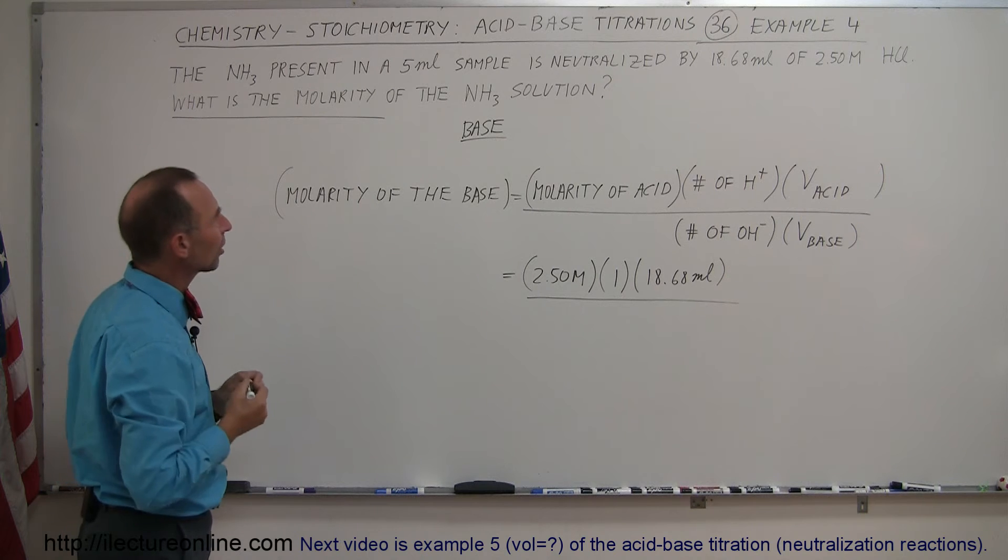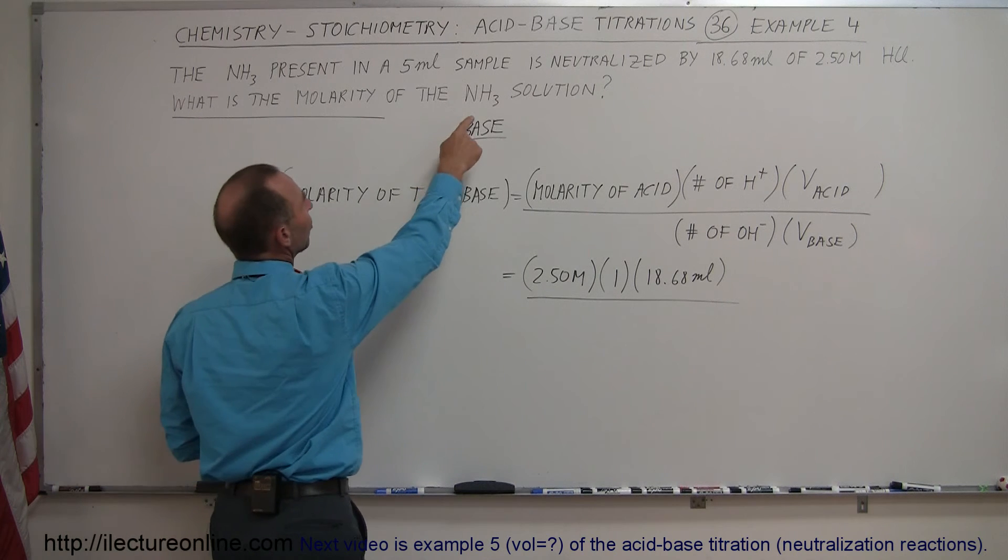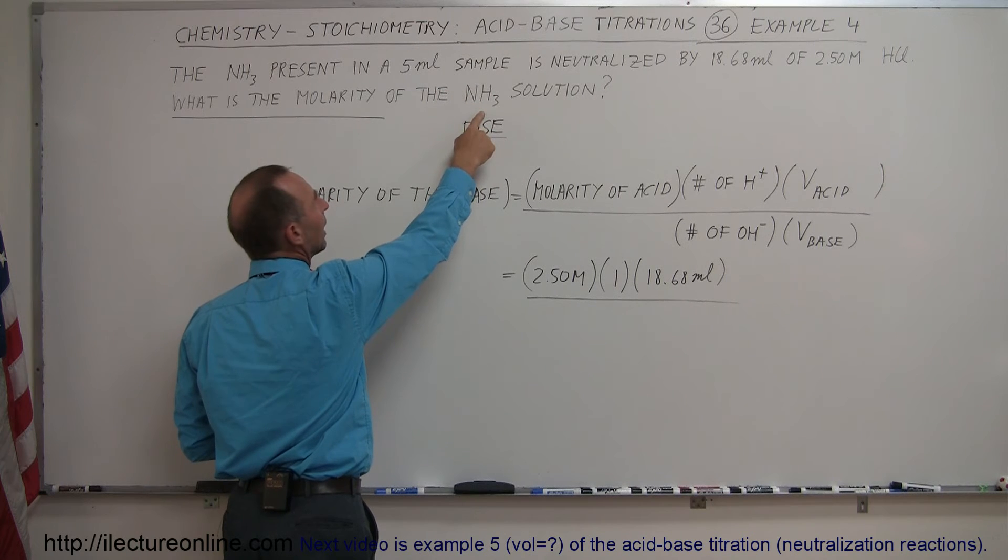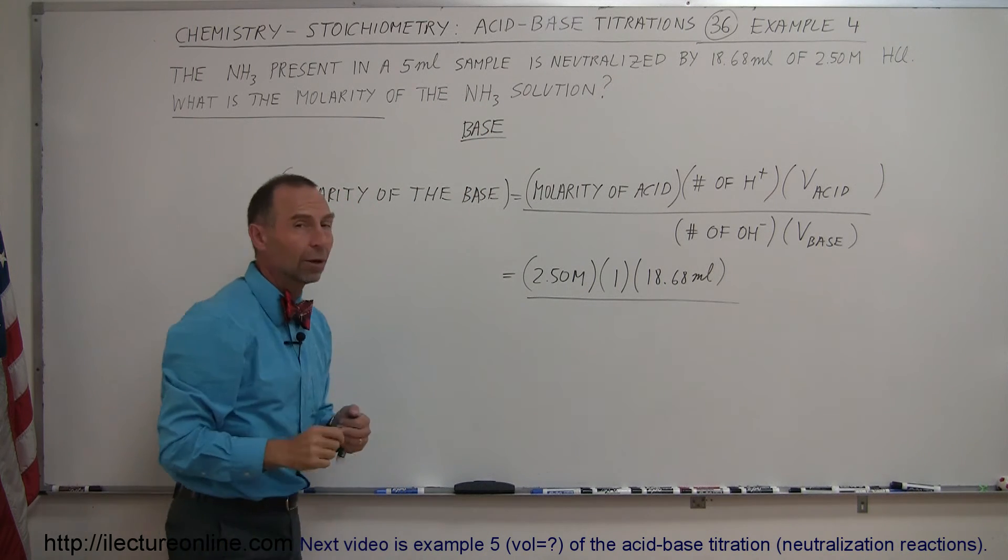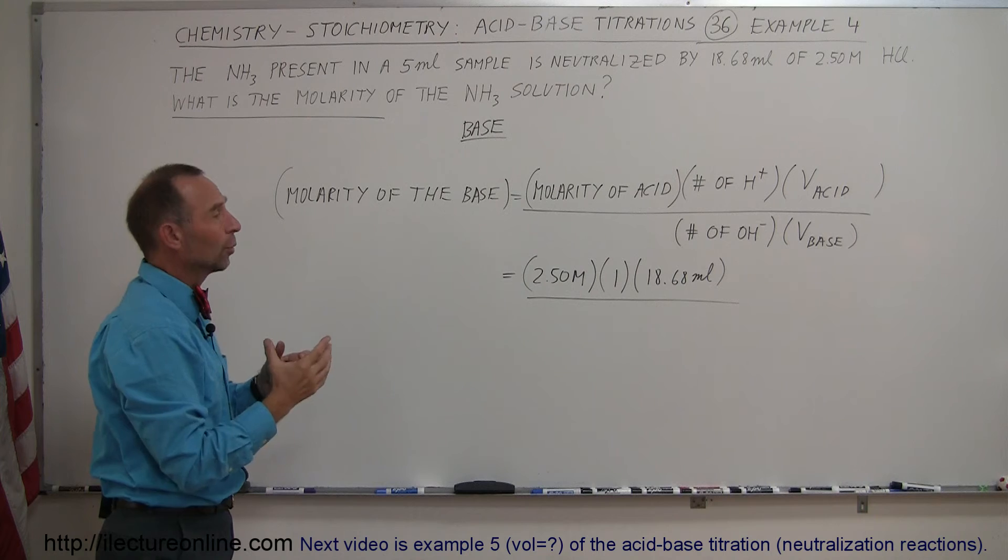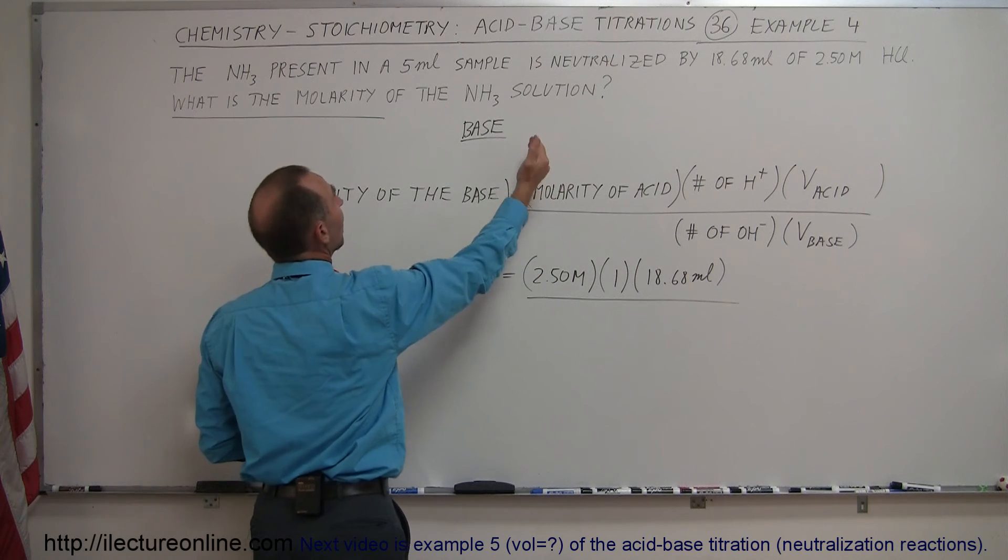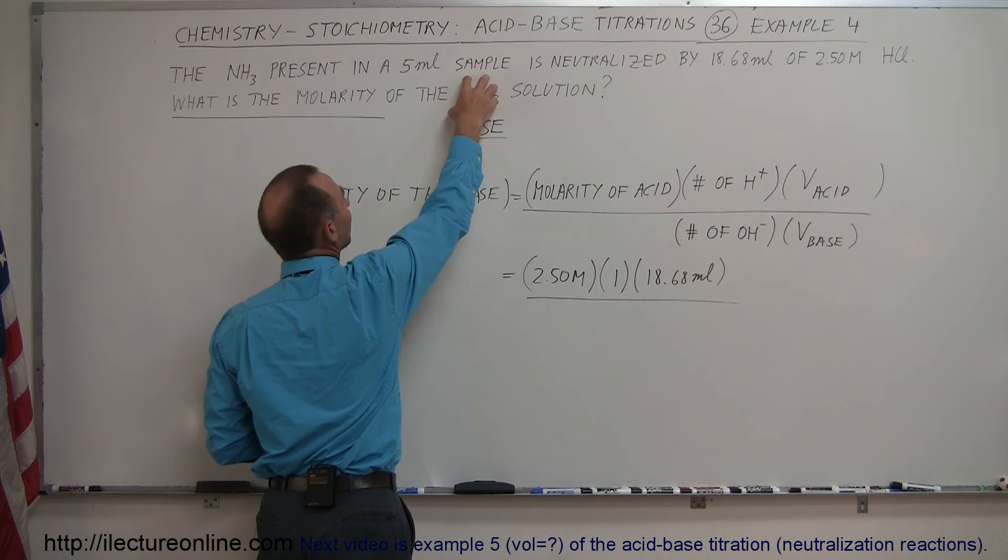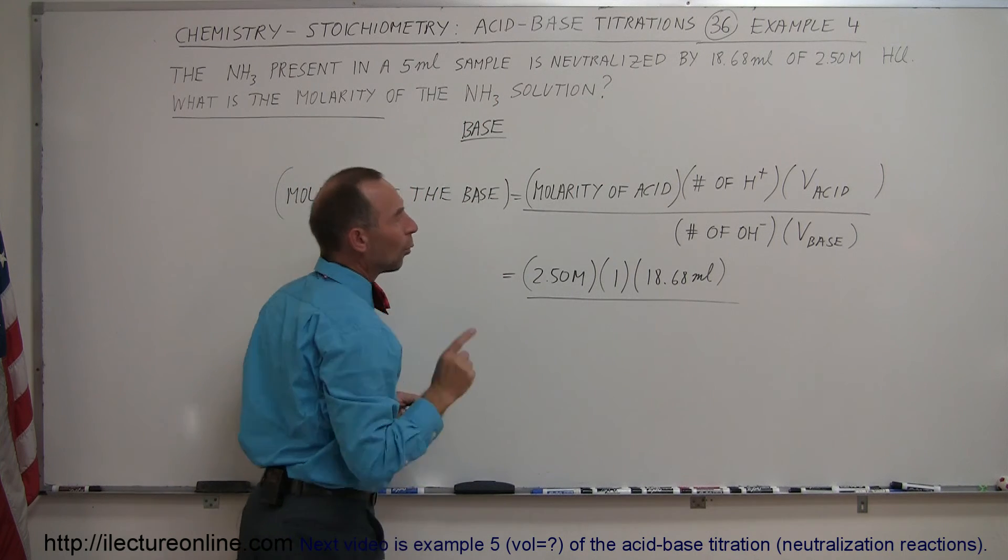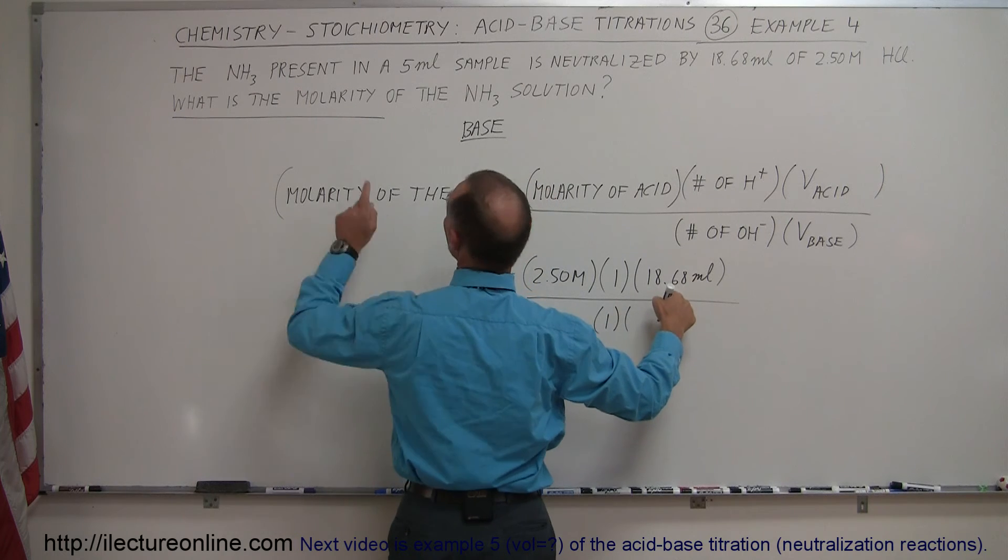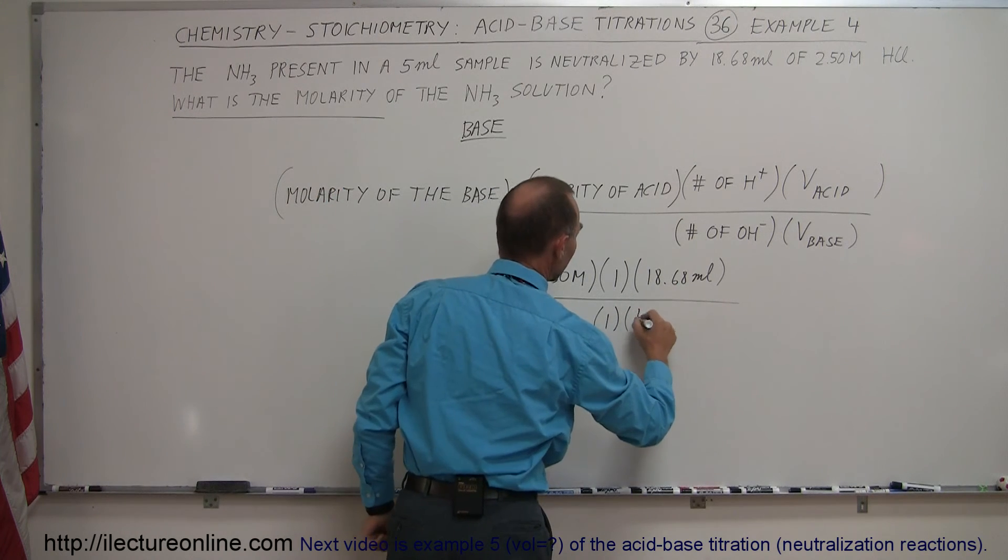Well how does ammonia produce hydroxide ions? Well what happens is when you put ammonia in a solution it will grab another hydrogen ion and become NH4+, which means it leaves one water molecule without the hydrogen, that becomes a hydroxide ion. So for every hydrogen ion taken by this molecule it produces one hydroxide ion, so that would be one, and the volume we had a 5 milliliter sample.